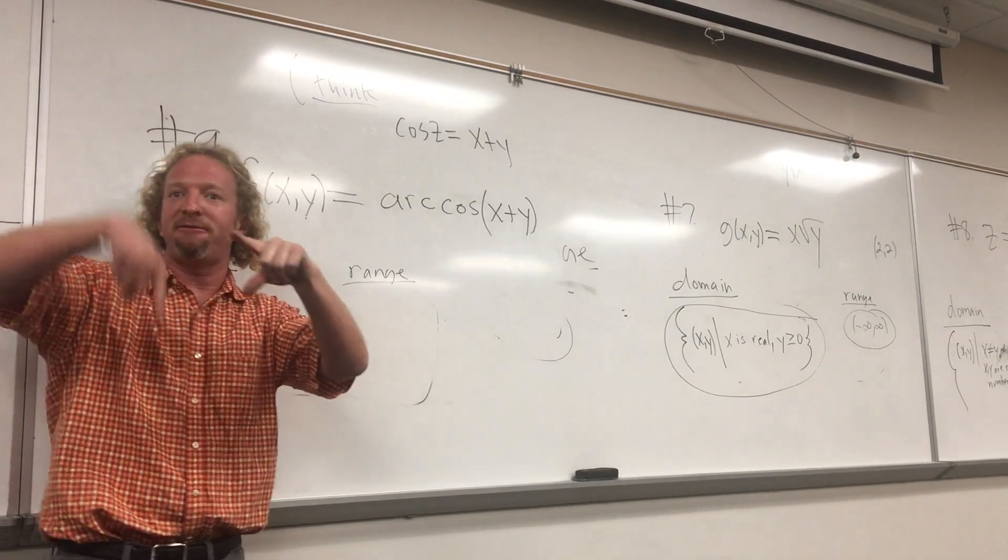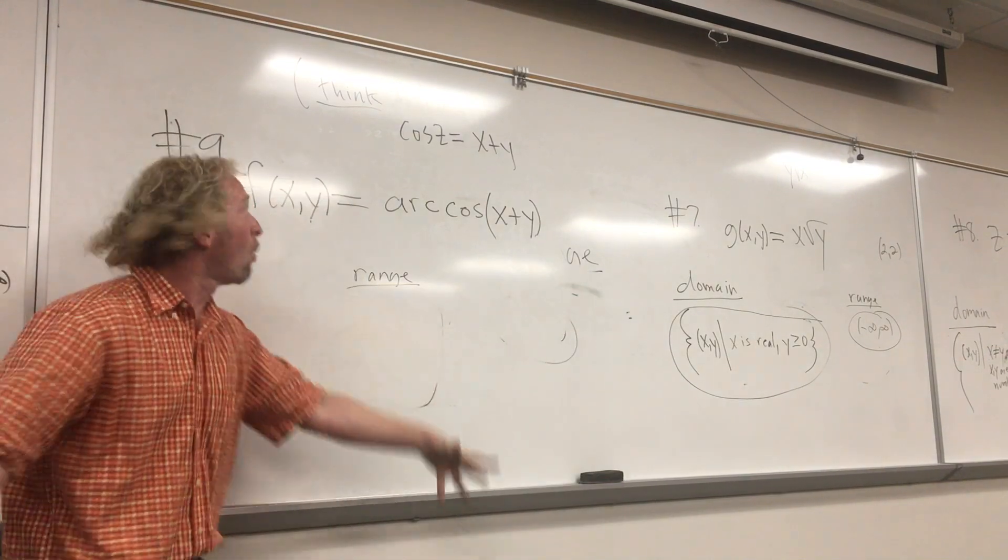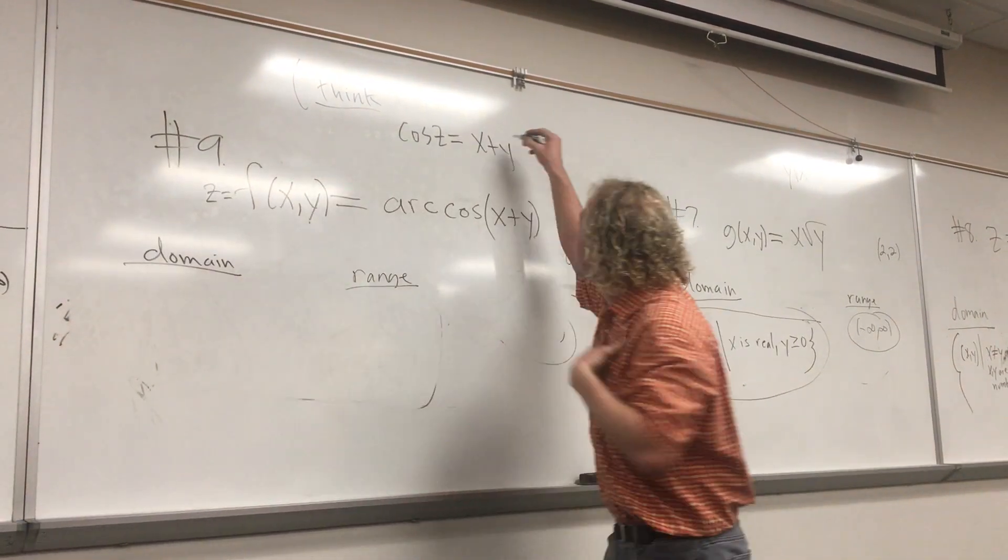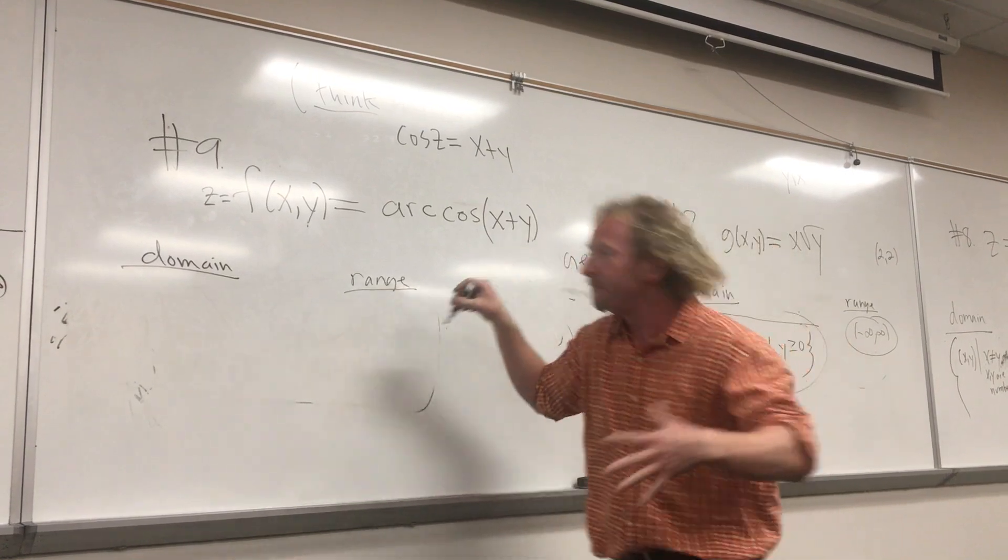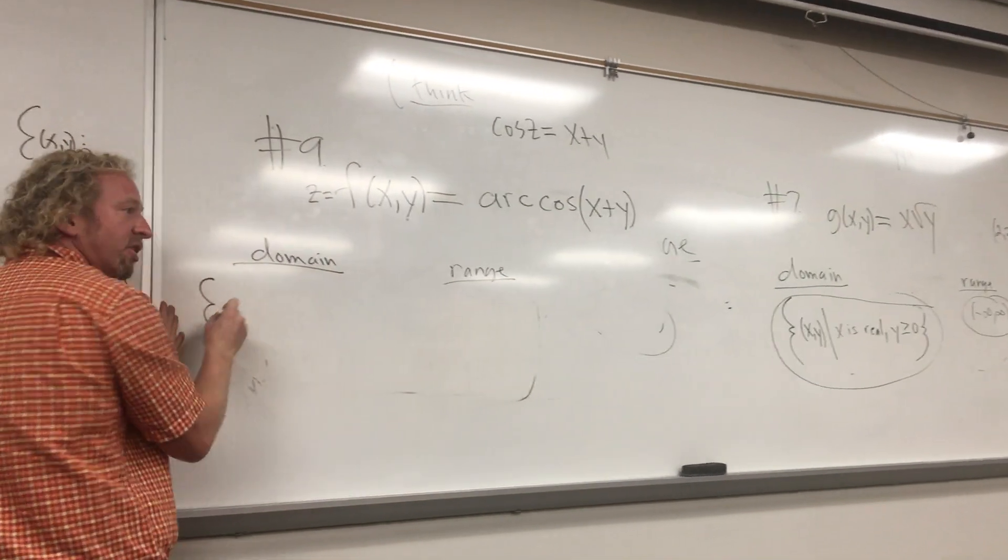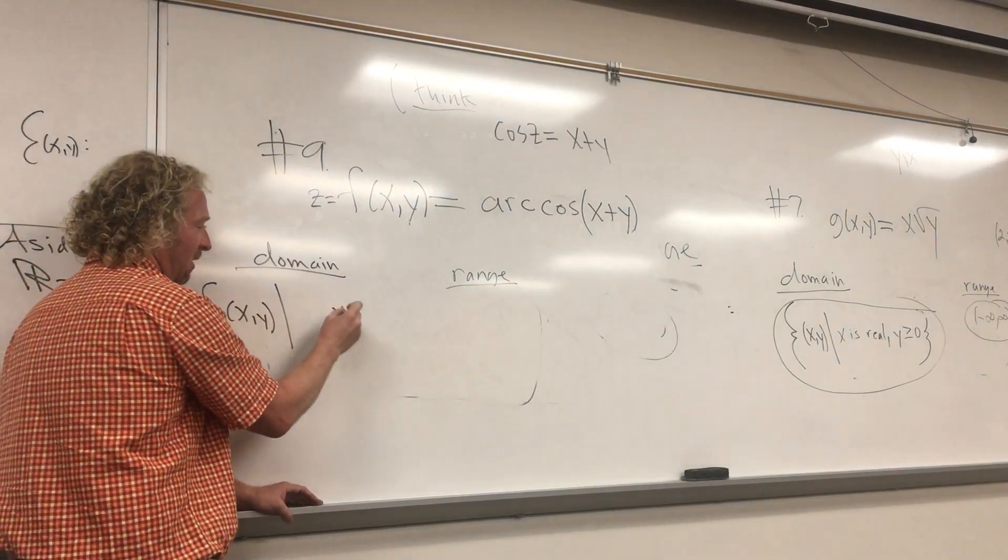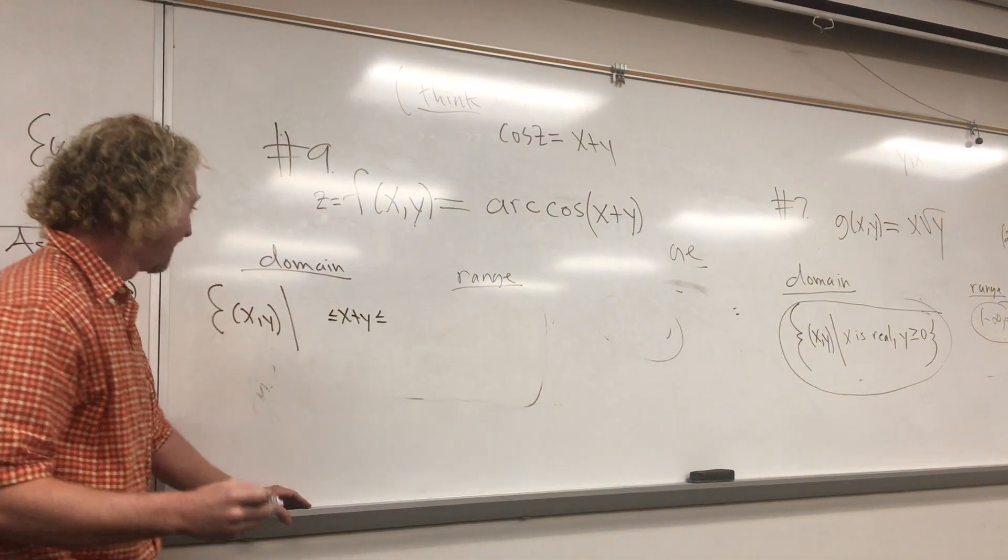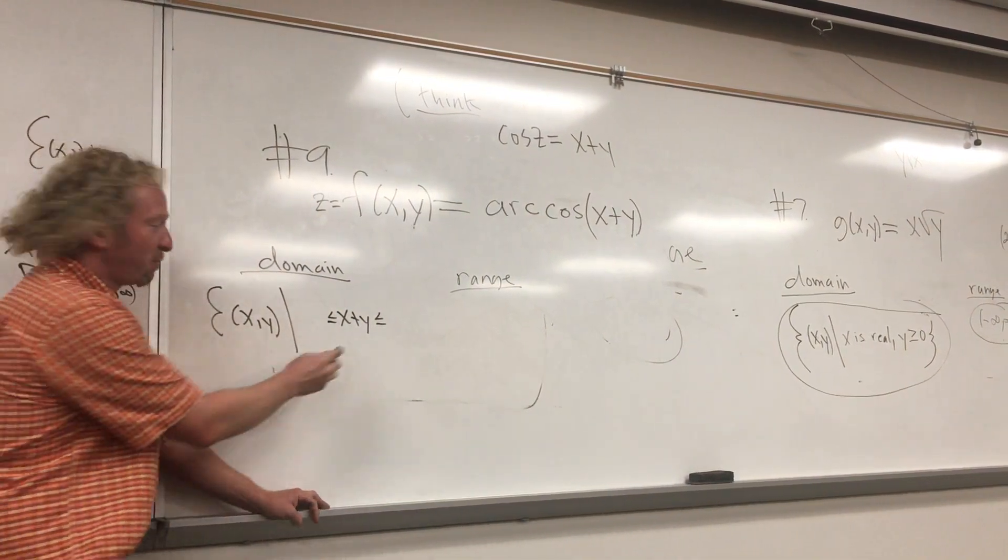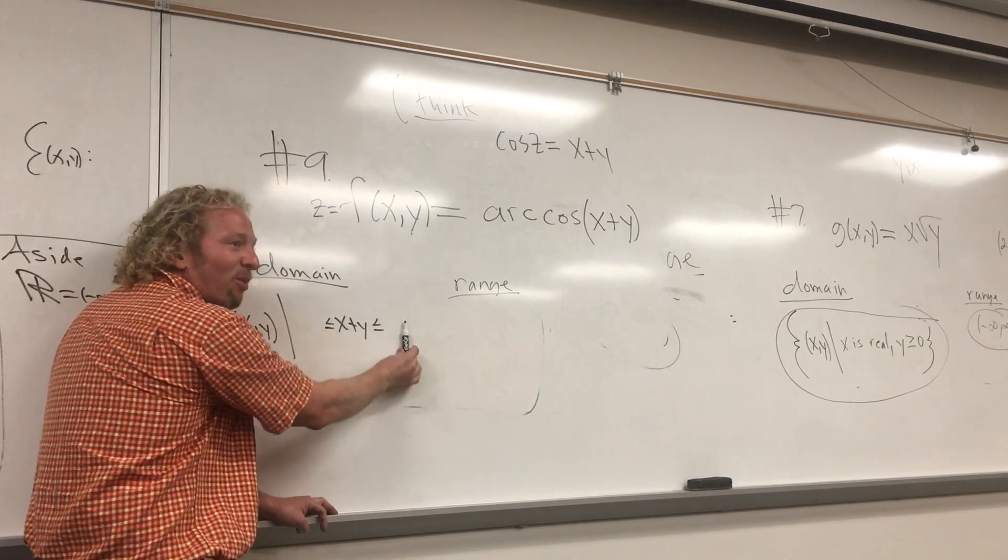So you know cosine is a wave function. And it's trapped between what two numbers? Minus one and one. Minus one and one. Very good. So this is between minus one and one. Oh, but wait, look. That's part of the domain. Right? So the domain is all of the x's and y's. Beautiful question. Minus one is less than or equal to x plus y and x plus y is less than or equal to one. Right. Good. So x plus y is between, that's exactly right, is between negative one and one. Beautiful.